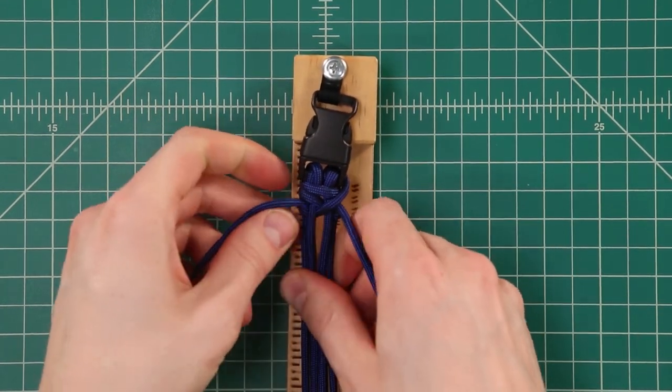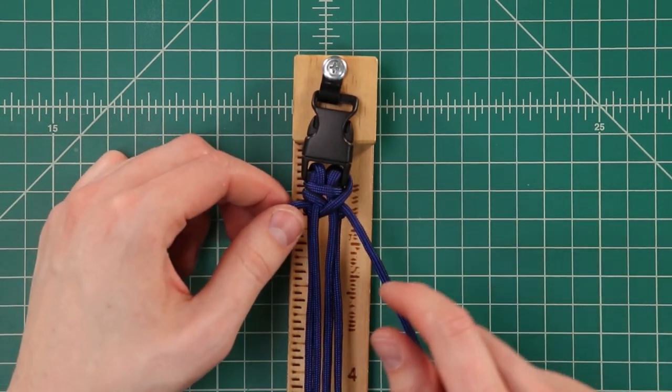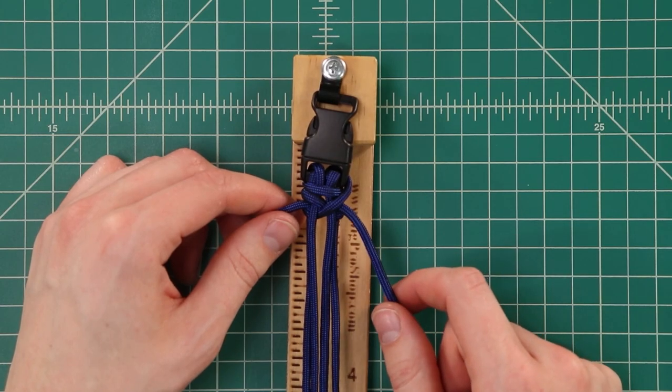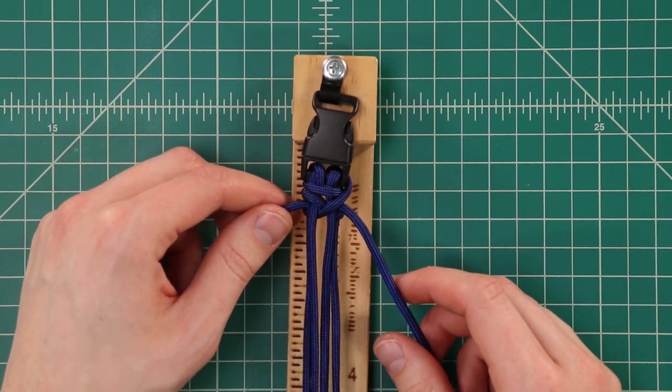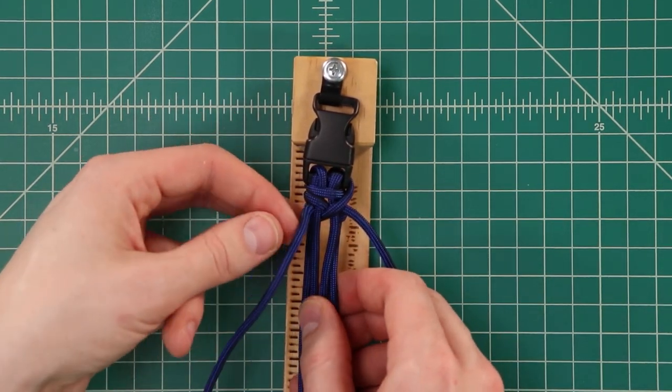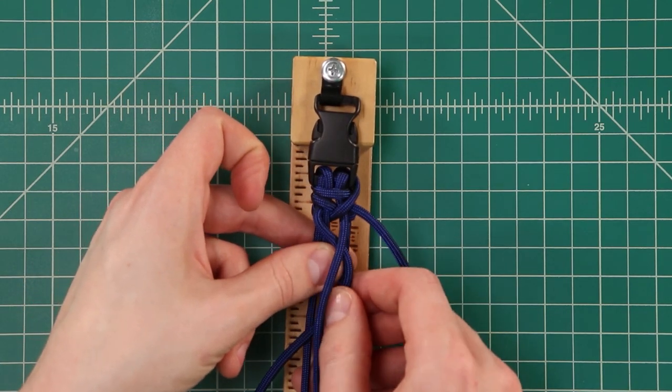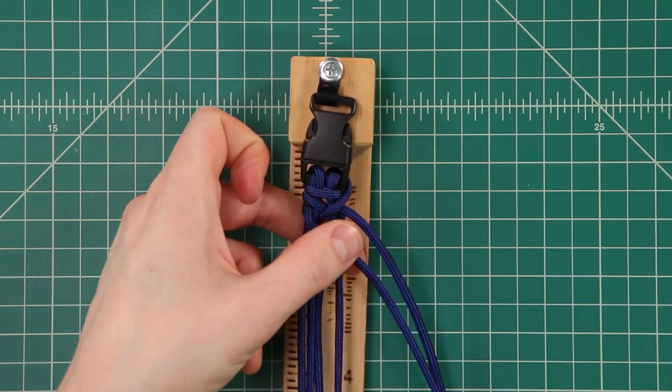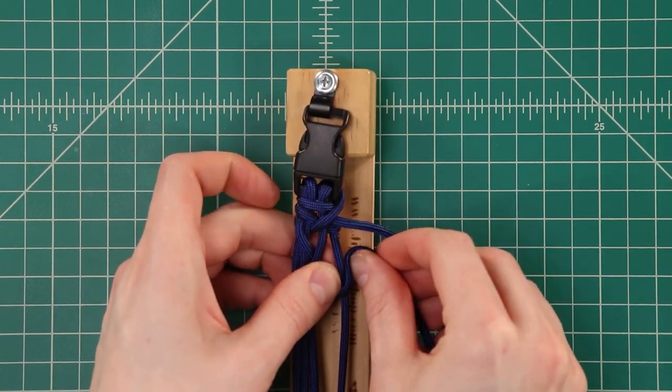Alright so we started with the left side cord last time and we want to do that again. Because of the zigzag pattern we want that right side to always be on the top otherwise our zigzags aren't going to look quite right. So like before bringing this cord down to the middle up through that right side and then loop it once more around this right side cord.